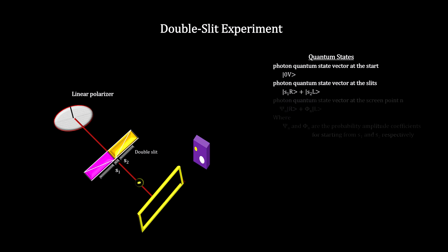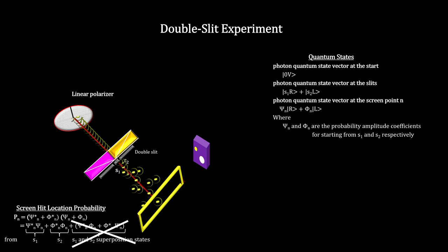Once the photon reaches the screen, we can measure its polarization and know which slit it went through. But, because the left and right polarization terms are orthogonal,